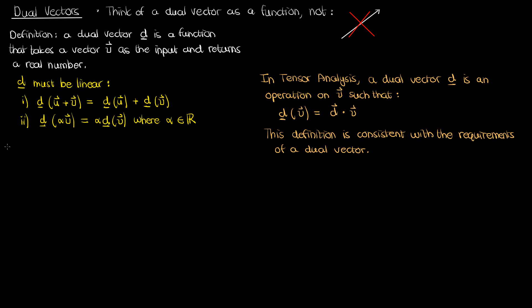You might still be somewhat confused — you might ask, what do you mean when you create a contravariant vector d corresponding to the dual vector d? What's the nature of d, what does it actually look like? For the rest of the video I'm going to give you some intuition behind the dual vector d and what it really means in tensor algebra. Let's start with a simple example.